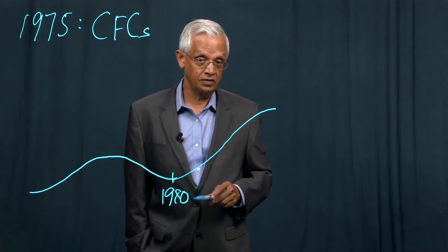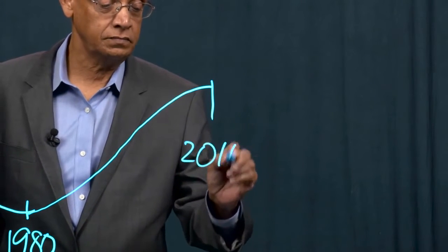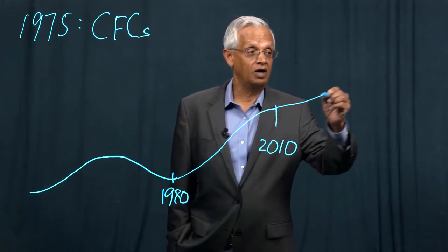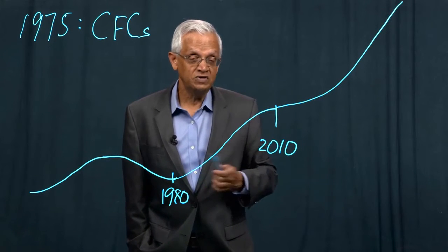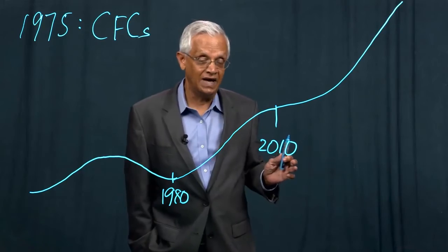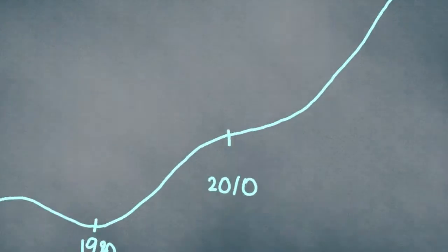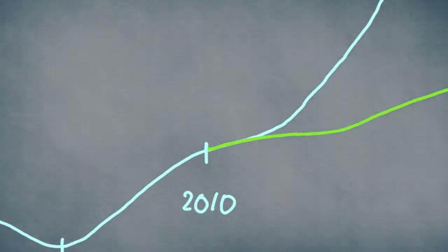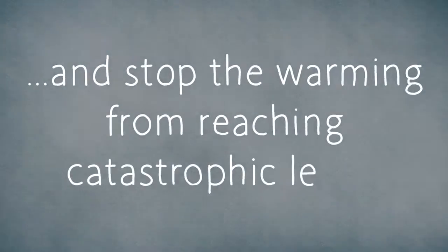So come 2010, the warming will take off and reach values which we have not seen in the last few million years. Can we do anything to stop this warming and bend the curve within 20 years from now and stop the warming reaching catastrophic levels?